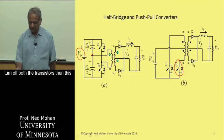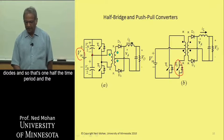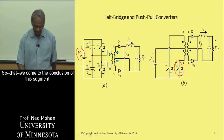then this current IL freewheels through these two output diodes. And so that's one half the time period and the other half then is similar.